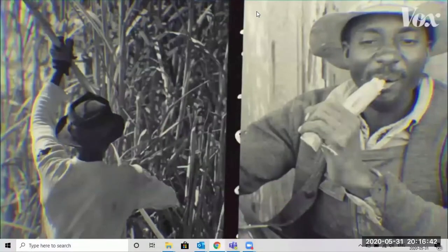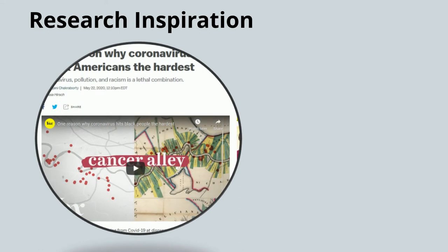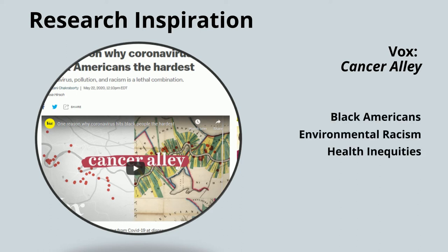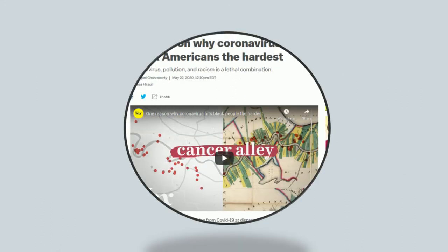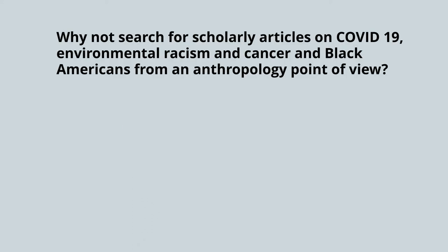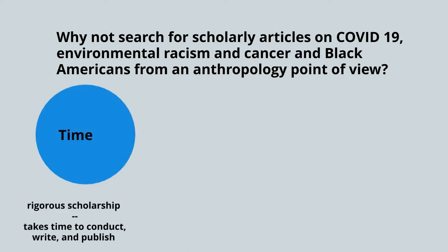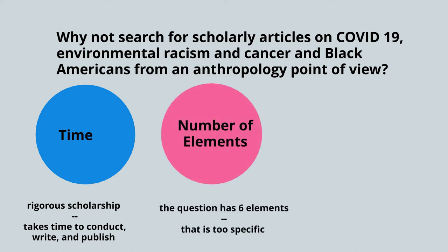One analysis of eight cities shows residents of historically redlined neighborhoods live with significantly higher levels of air pollution and are more than twice as likely to visit emergency rooms for asthma today. The research draws a strong connection between history and health, and how even now, 80 years after these maps were drawn, they still play a role in not just where people live, but how healthy they are. This Vox documentary is fascinating and has a lot of components. It could lead to scholarly articles about environmental racism, cancer, Black Americans, and COVID from an anthropology point of view.